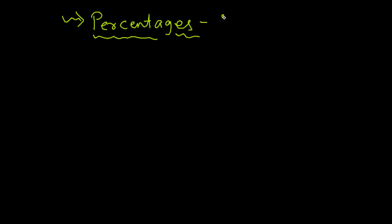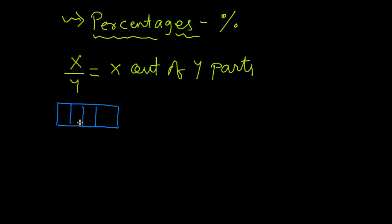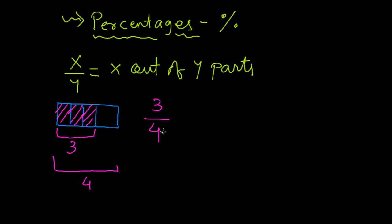We will represent percentage with this symbol. Any fraction, let us say x by y, actually means x out of y parts. Suppose there are four equal parts — they are not appearing equal, but just assume that they are equal. We are selecting three out of four parts. This fraction would be three out of four, and we write it as three by four, or three out of four parts.